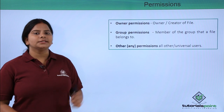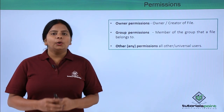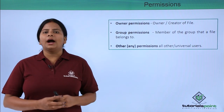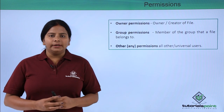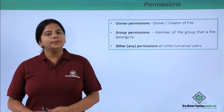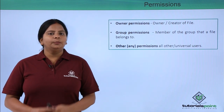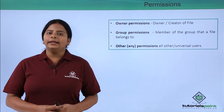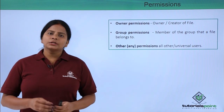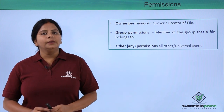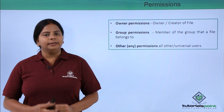The next one is called group permission. The owner decides which users can be added to its group. The owner can add users manually into the group and then assign permissions to that group of users. There is no limitation on the number of users that can be added to a group. The next permission is for others — the public who are going to access your file.